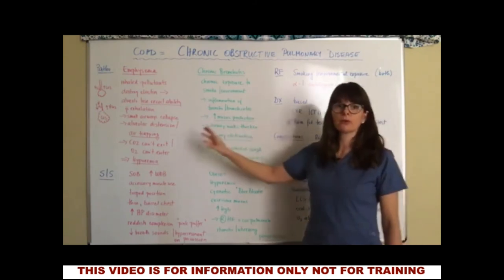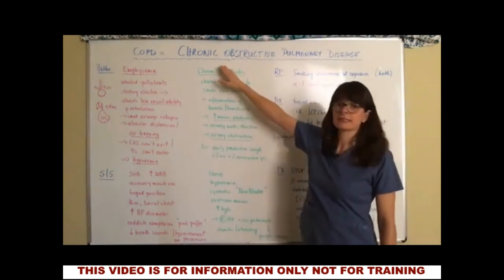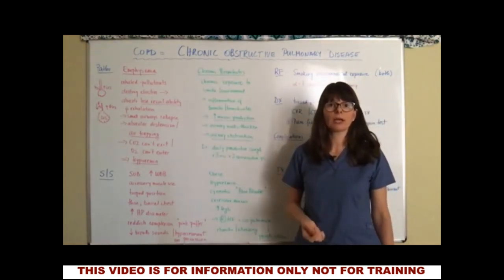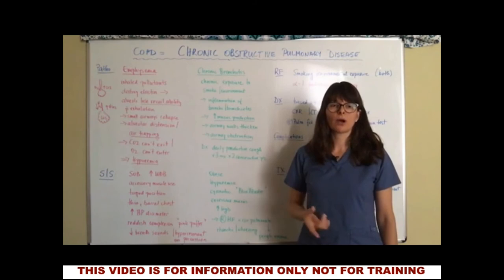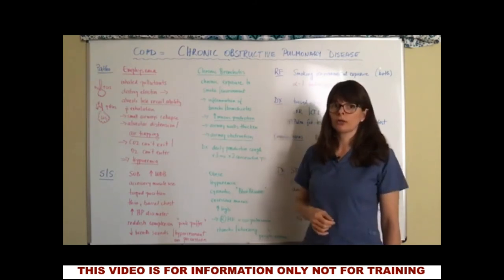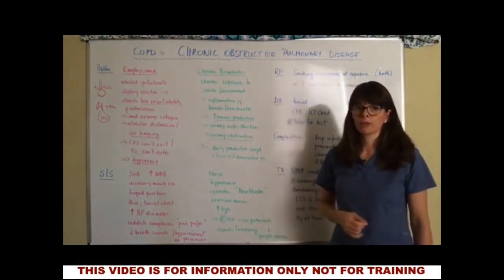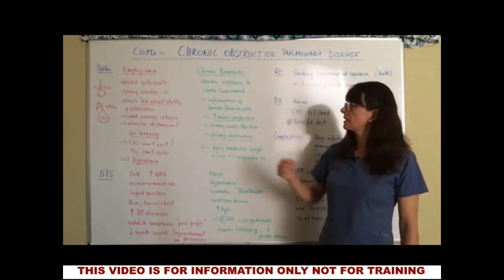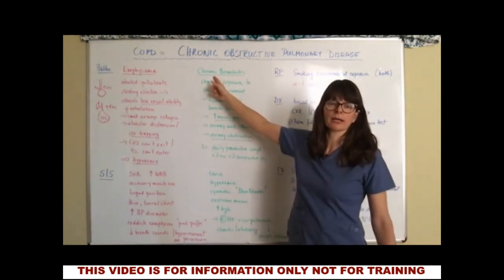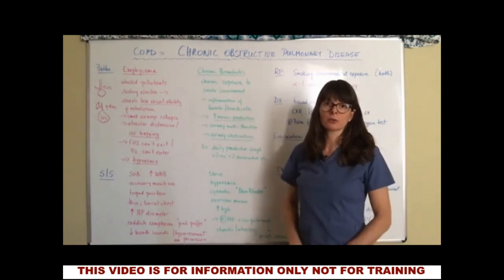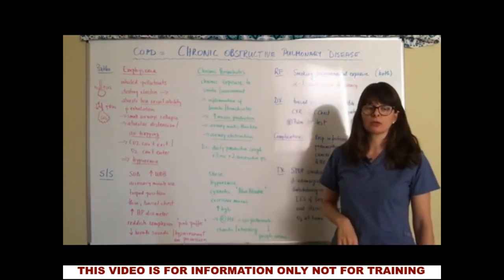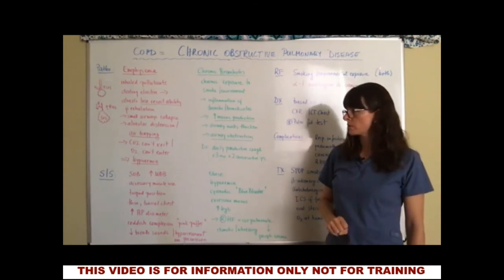Keep in mind, both of these are chronic diseases, so nothing happens really quickly. This is a chronic exposure and these changes happen very slowly over time. This is in contrast to, say, acute bronchitis, which an upper respiratory infection can lead to. But today we'll stick with these chronic respiratory disorders.